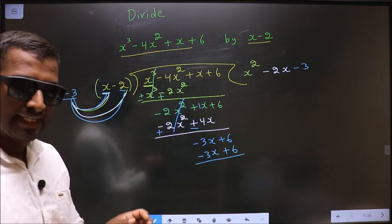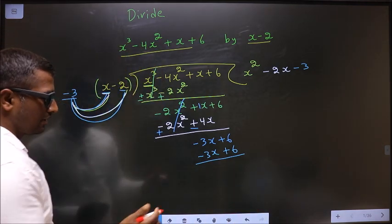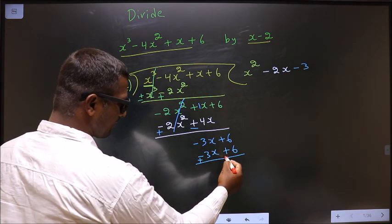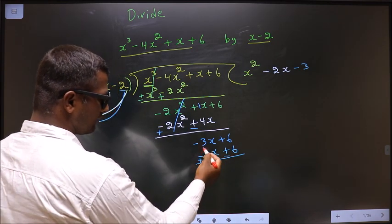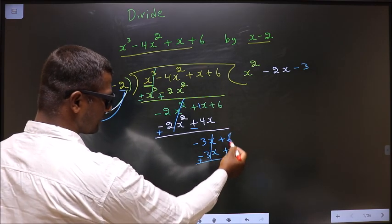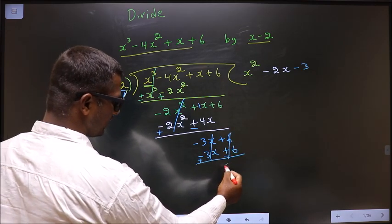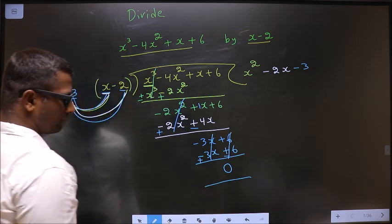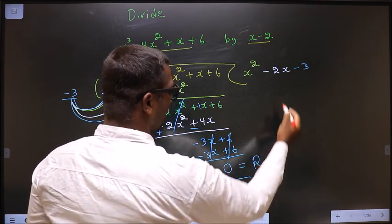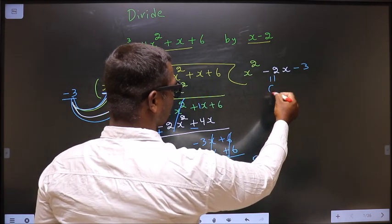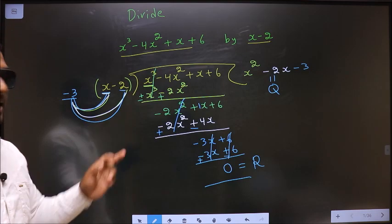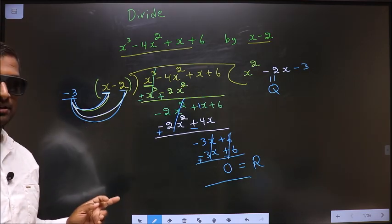Now change the signs. Here it is minus, make it plus. Here it is plus, make it minus. So minus 3x plus 3x cancel out. Plus 6 minus 6 cancel out. You get 0. This is the remainder. And this is the quotient. Am I clear? Here it is.